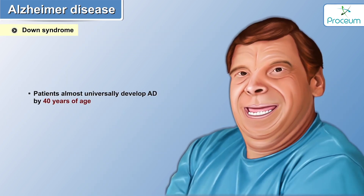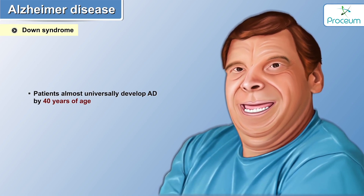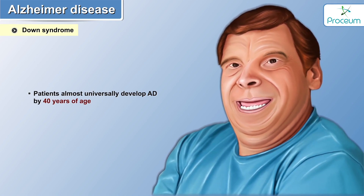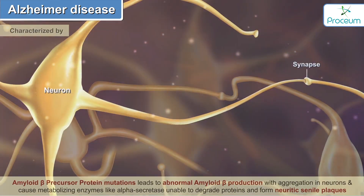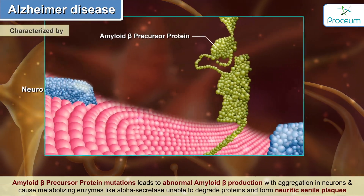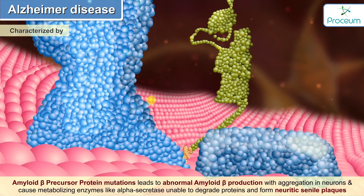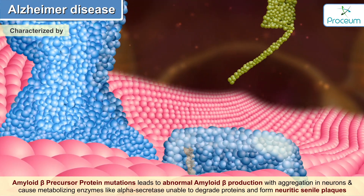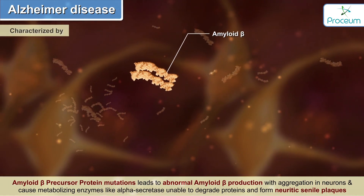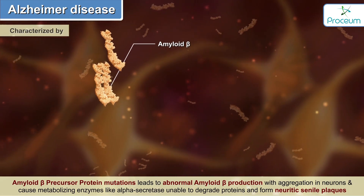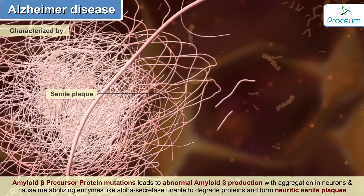Down syndrome patients almost universally develop Alzheimer's disease by 40 years of age. Down syndrome is characterized by the presence of an extra chromosome 21, with increased expression of the beta amyloid precursor protein gene. Beta amyloid precursor protein mutations lead to abnormal beta amyloid production and deposition. The aggregation in neurons causes metabolizing enzymes like alpha secretase to be unable to degrade the proteins, forming neuritic senile plaques.